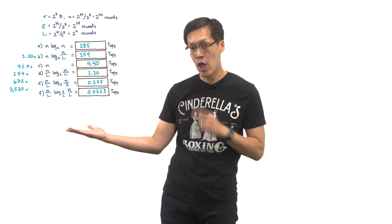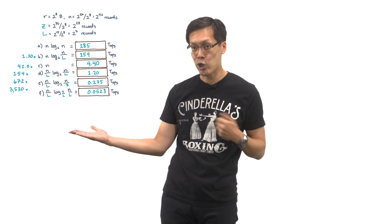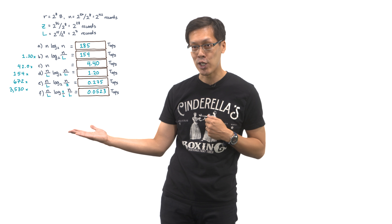I/O-avoiding algorithms can be messy, much messier than their conventional RAM model counterparts anyway. But we started this lesson by trying to argue that this effort can be very worthwhile. Remember the exercise where you looked at potential reductions in I/O's given realistic memory hierarchy parameters? You saw that there's a lot of potential to make computations faster.